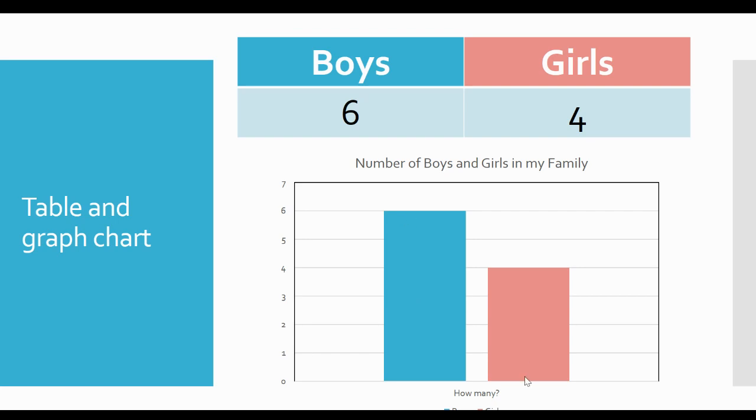And the pink side, you see girls go all the way up to four, because there are four girls in my family. So looking at the data, I can figure out, do I have more boys in my family or more girls in my family? What do you think?